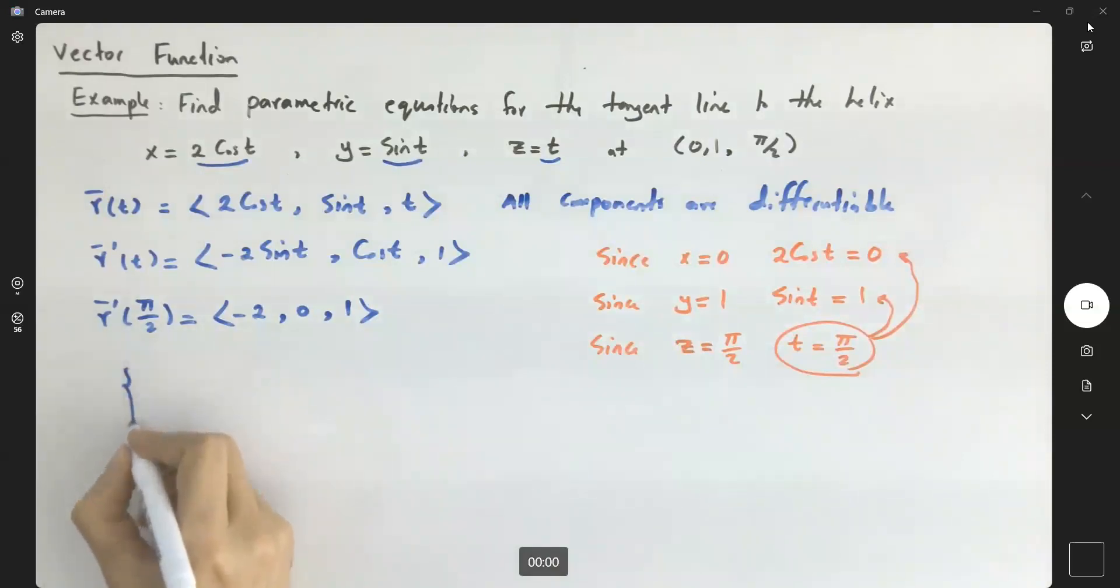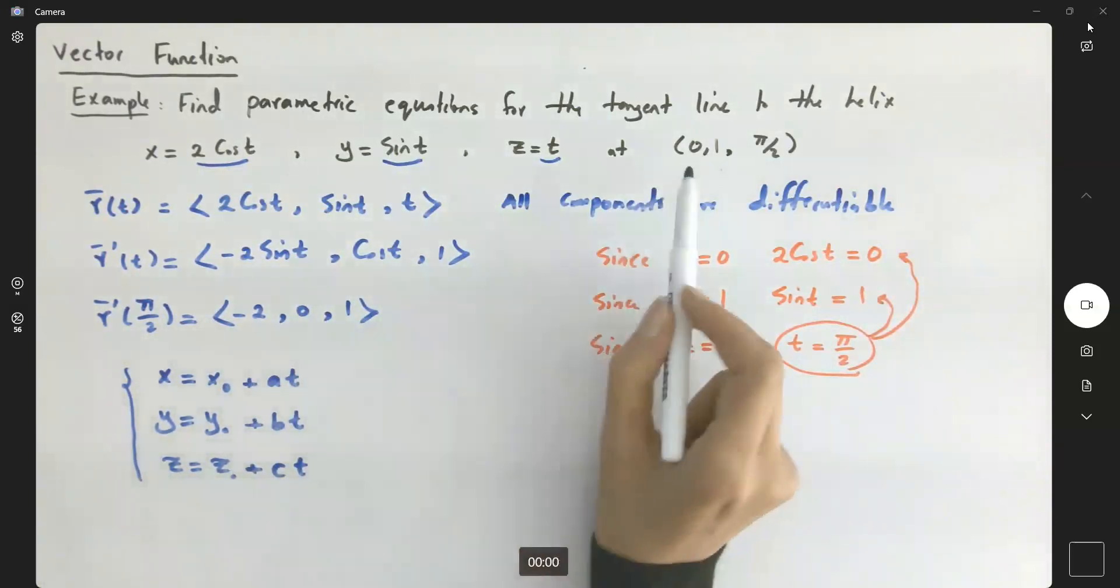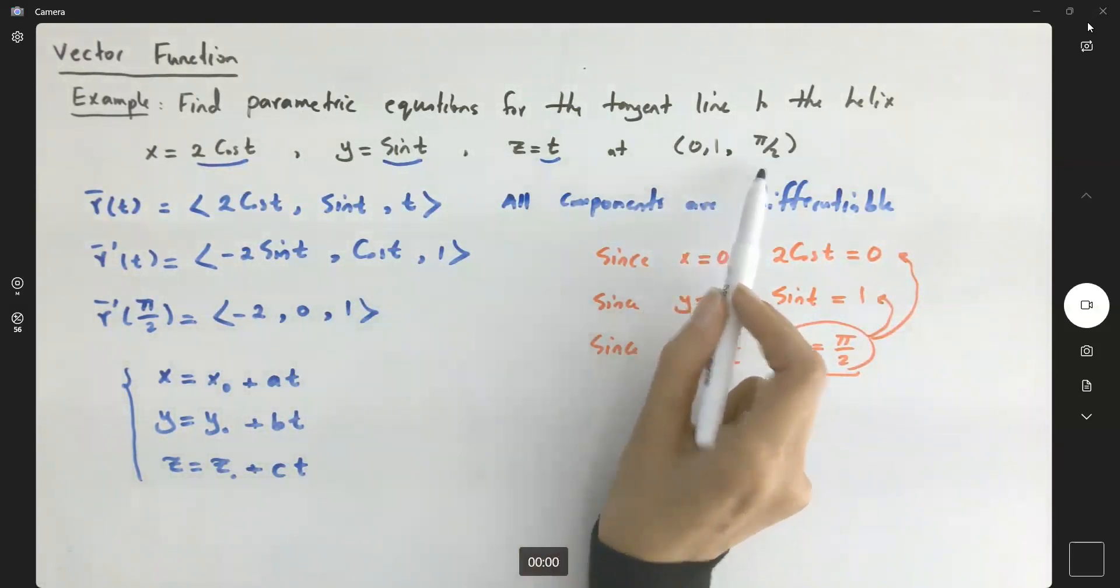Recall that the parametric equations of the line was defined as x equal to x₀ plus at, y was y₀ plus bt, and z is equal to z₀ plus ct. So here you have your direction vector and the point that you're going to use is (0, 1, π/2).